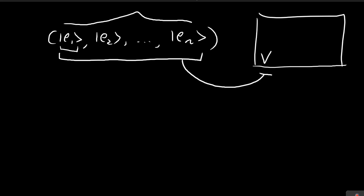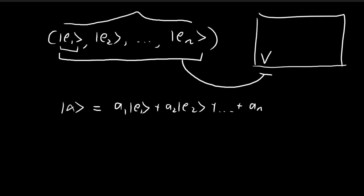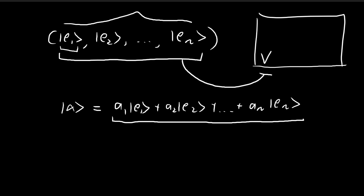What this problem is asking us to prove is that, given a vector alpha from the vector space V, which by the definition of a basis can be expressed as a linear combination of the basis vectors, this linear combination is unique. There is only one way to set these scalars so that the entire linear combination equals alpha.